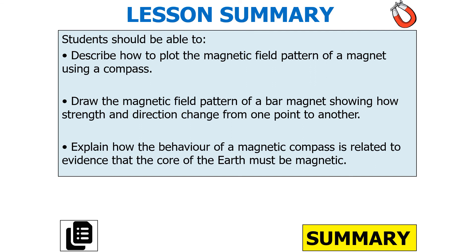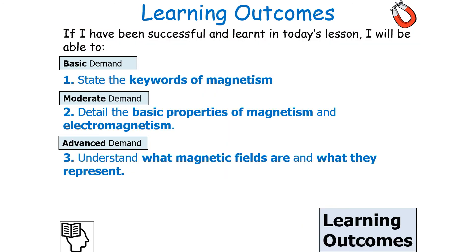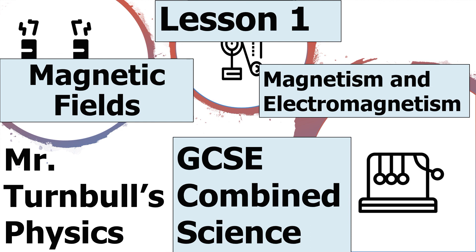You should also be able to describe how to plot the magnetic field pattern of a magnet using a compass, draw the magnetic field pattern of a bar magnet showing how strength and direction change from one point to another, and explain the behavior of a magnetic compass in relation to the evidence that the core of the earth must be magnetic. If we've been successful today, we can state the key words of magnetism, detail the basic properties of magnetism and electromagnetism, and understand what magnetic fields are and what they represent. I hope you've enjoyed today's lesson on magnetic fields, part of the magnetism and electromagnetism topic in GCSE Combined Science. Thank you very much and have a lovely day.